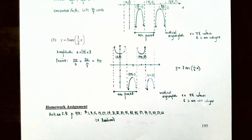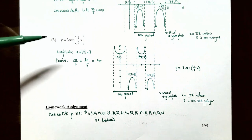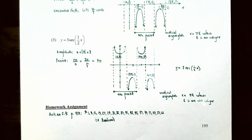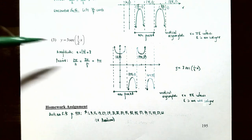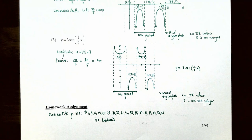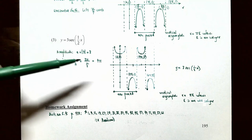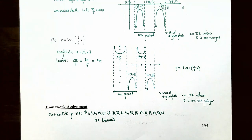Number three: y equals 3 times secant of (1/2)x. We're multiplying the secant function by 3, so the amplitude is the absolute value of 3, or 3. The period is also affected because k equals 1/2. The period is 2π divided by k, which is 2π divided by 1/2. Multiplying by the reciprocal gives 4π. So the graph repeats every 4π radians, not every 2π radians. There is no horizontal shift since we're not adding or subtracting inside the argument.